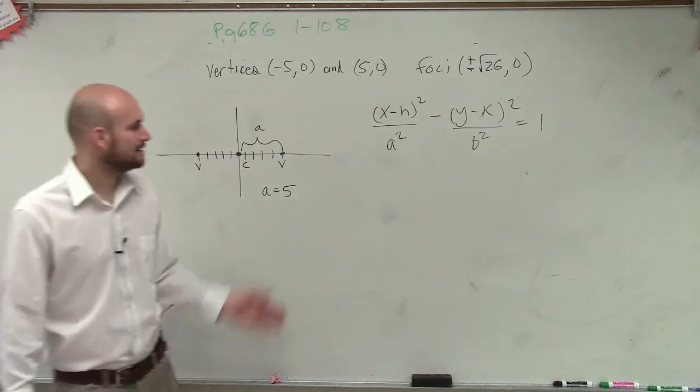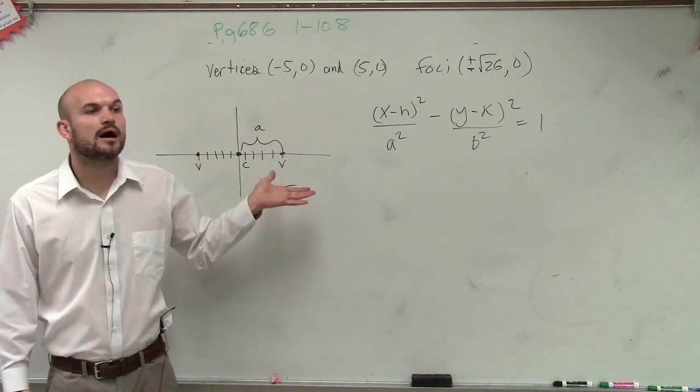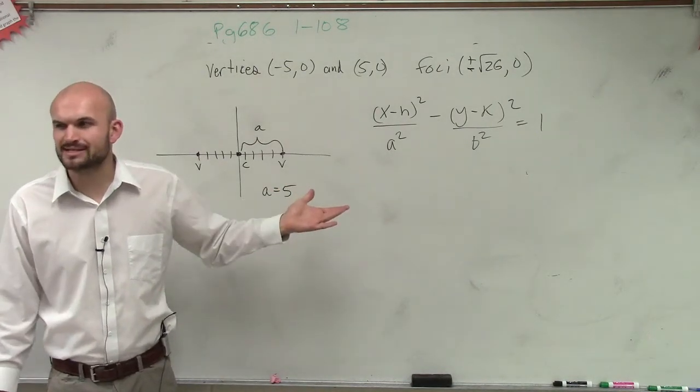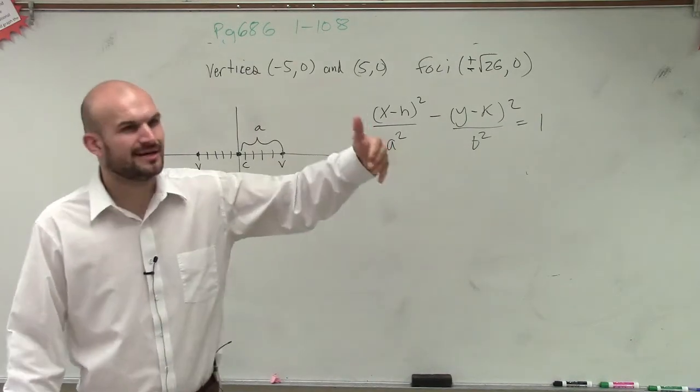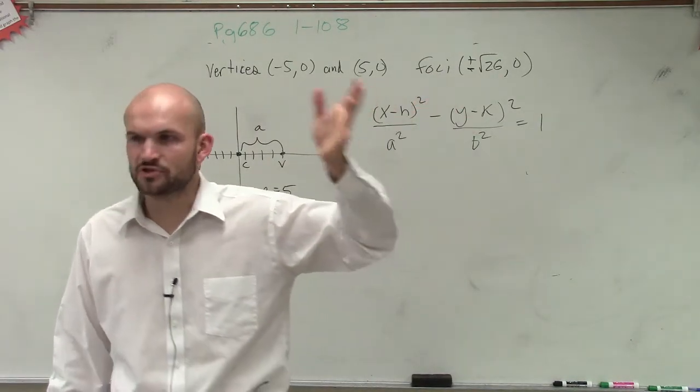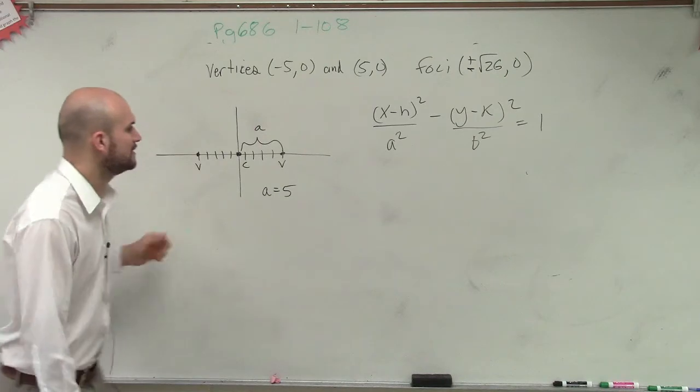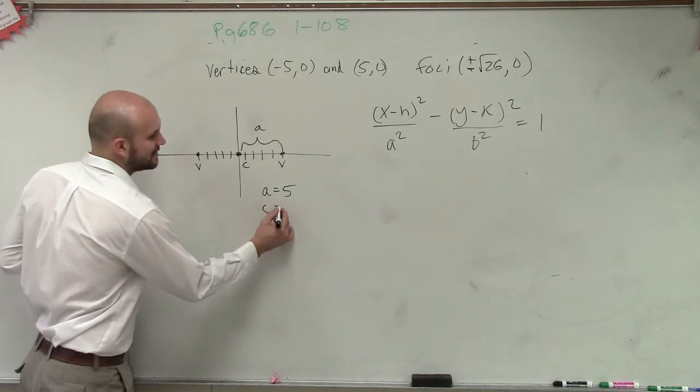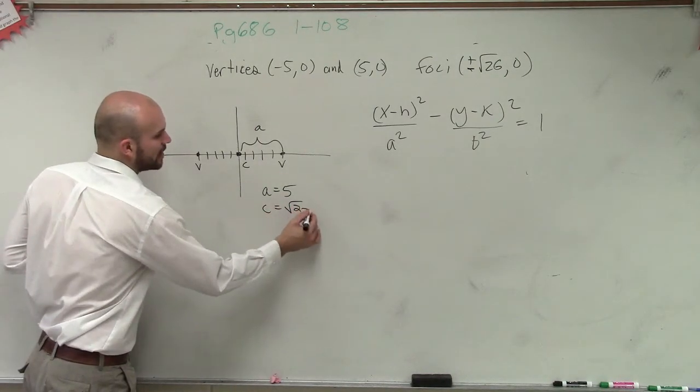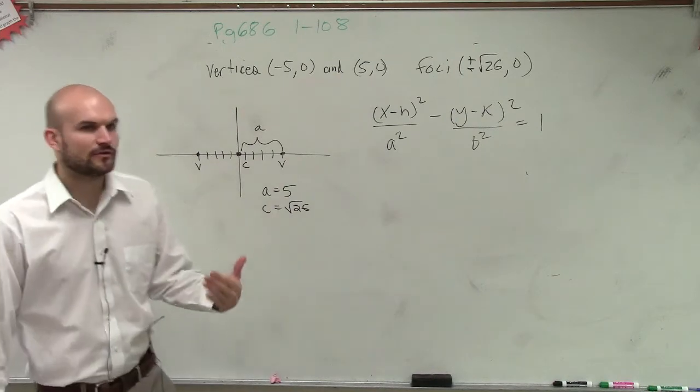Then they say c. Our c is going to be the square root of 26, which if you plug in your calculator is going to be 5.1, 2, 3, whatever, somewhere around there. So we know that c is going to equal the square root of 26. However, for our equation,